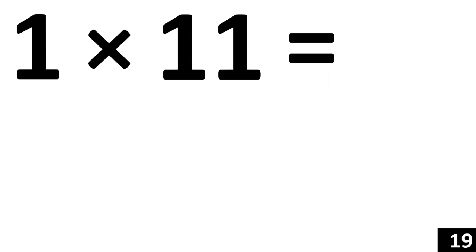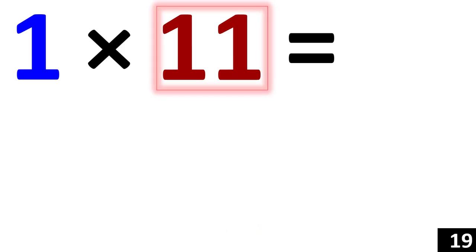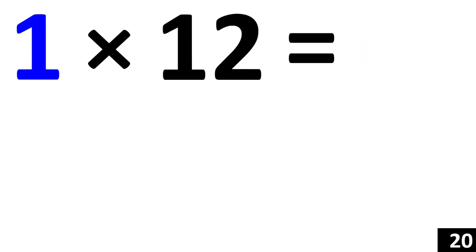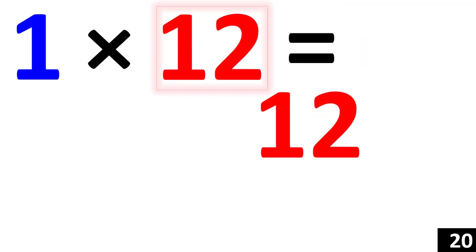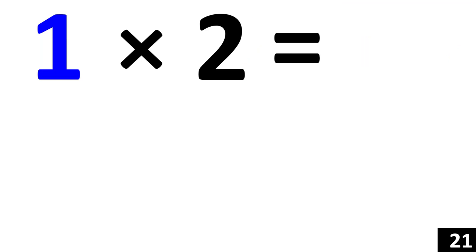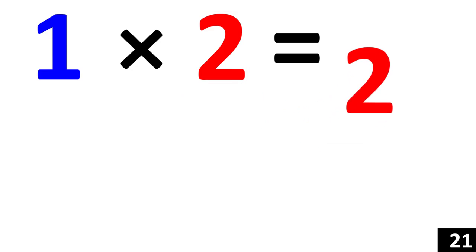We know that any number times 1 is that number. Therefore, 1 times 11 is equal to 11, and 1 times 12 is equal to 12. 1 times 2 is equal to 2.